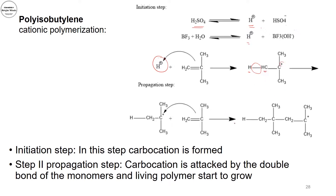What happens next is the propagation step, in which another double bond — another monomer — attacks the carbon cation. The monomer with the double bond attacks the carbon cation and the living polymer starts to grow. Now I have two monomers attached together as a carbon cation. This propagation step will continue, which is why we call it a living polymer, similar to free radical polymerization.